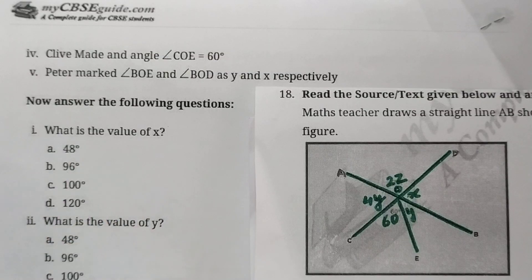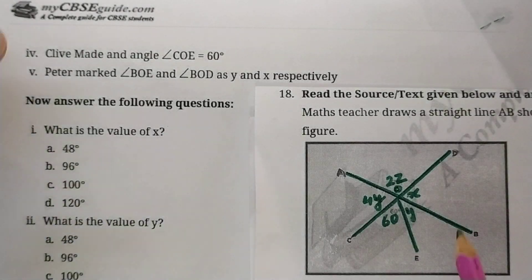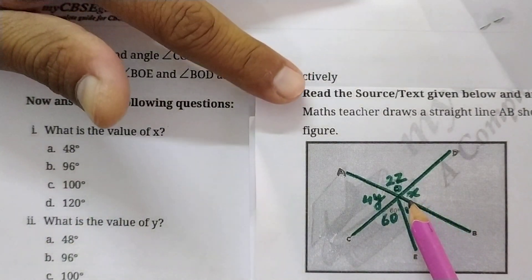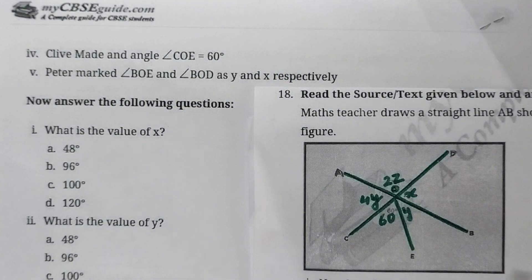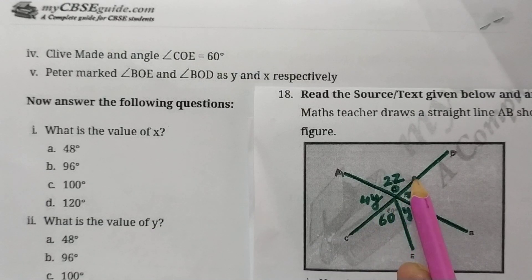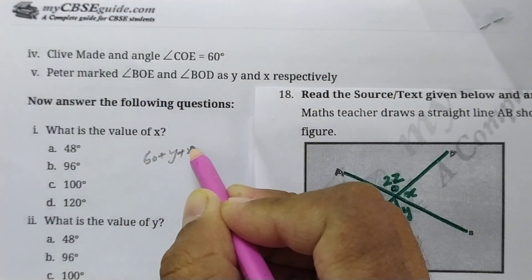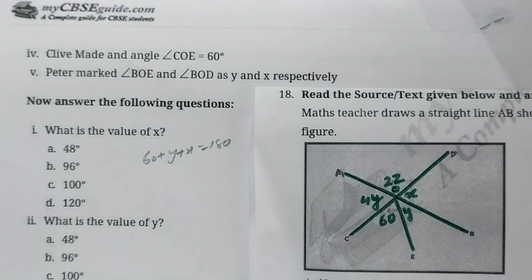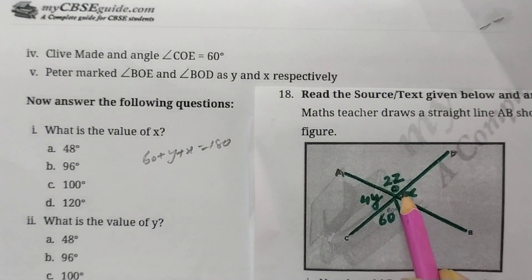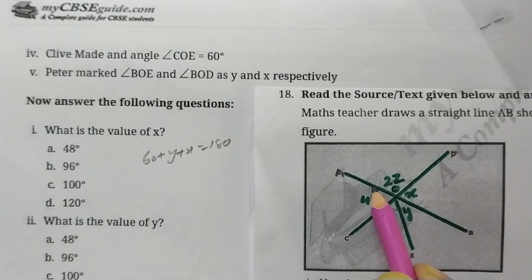So let's see what are the questions. What is the value of x? So we need to find out the value of x here. So let's see how to find out. First of all, you can see that 60 plus y plus x, these all are coming on a straight line. These all three angles are on the straight line, so their sum will be 180. So we'll write here: 60 plus y plus x is equal to 180 degrees.